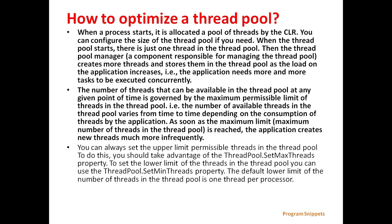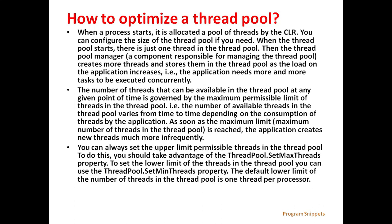As soon as the maximum limit is reached, the application creates new threads much more infrequently. You can always set the upper limit of permissible threads in the thread pool by using the ThreadPool.SetMaxThreads property. To set the lower limit of threads in the thread pool, you can use the ThreadPool.SetMinThreads property. The default lower limit is one thread per processor.